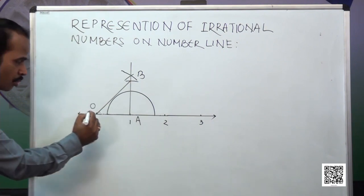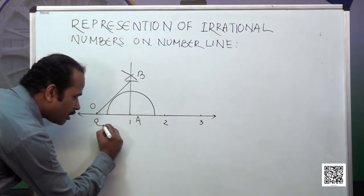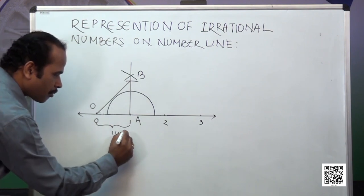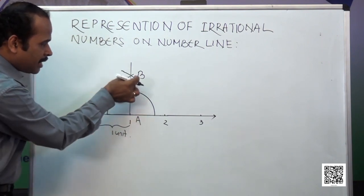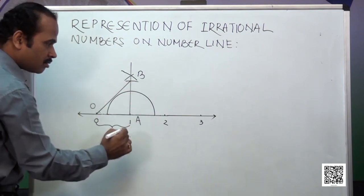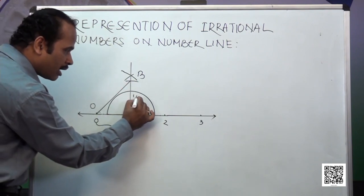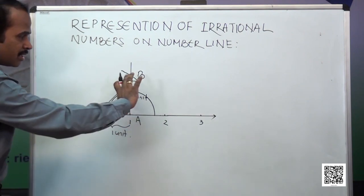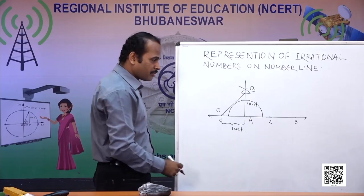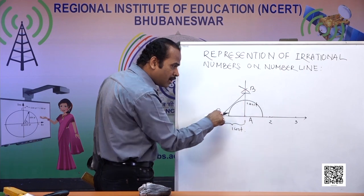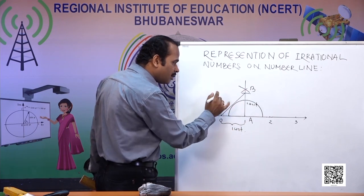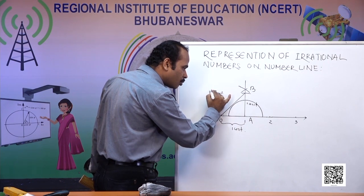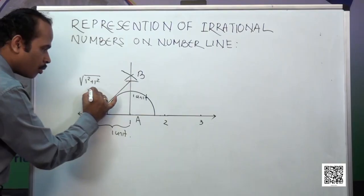In triangle OAB, the distance OA is 1 unit and the distance AB is also 1 unit. By using the Pythagoras theorem, the hypotenuse of this right angle triangle will be the square root of 1 squared plus 1 squared, which equals root 2 units.